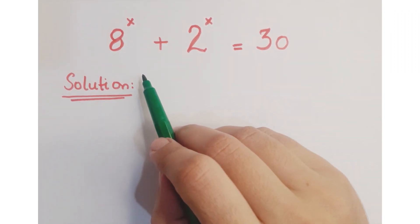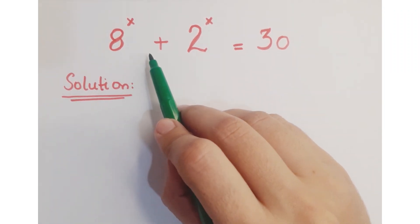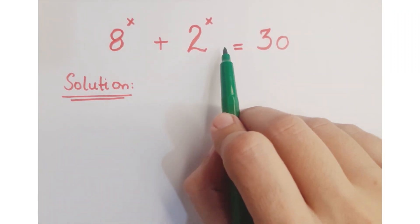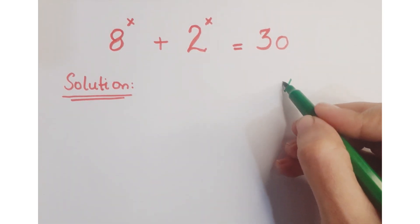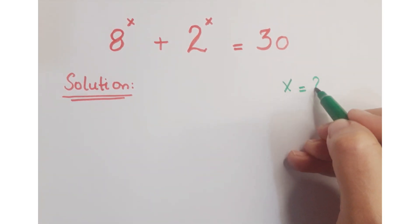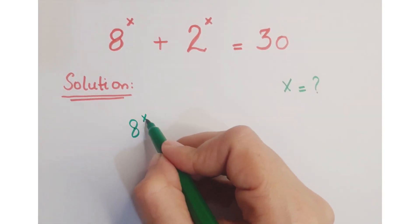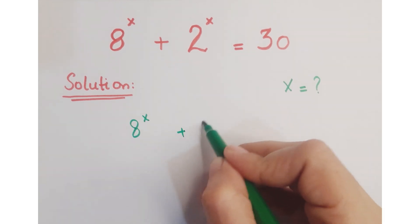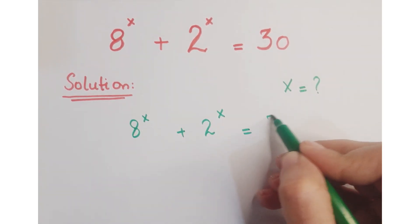Hi guys, look at this question. The question is 8 to the power x plus 2 to the power x equals 30, and we have to find out the value of x. Let's see how we proceed with this question.